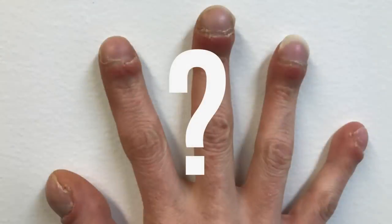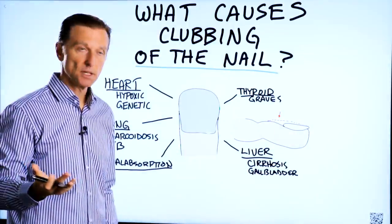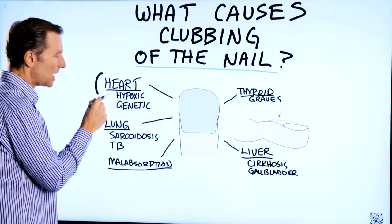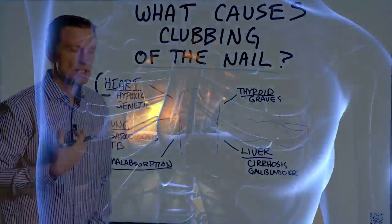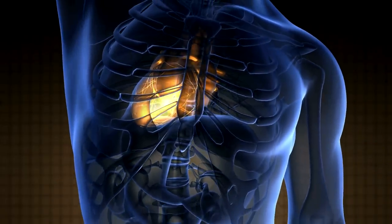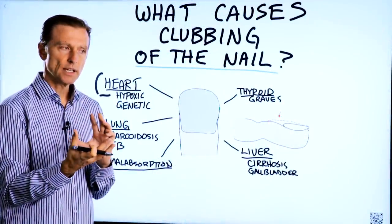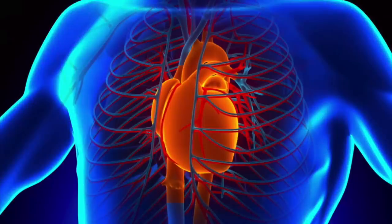But what's behind it? Well, there are several things it could be. One would be related to the heart - maybe a hypoxic condition where you're not getting enough oxygen and it's showing up in the nails. There's another condition which is genetic, involving the structural part of the heart.